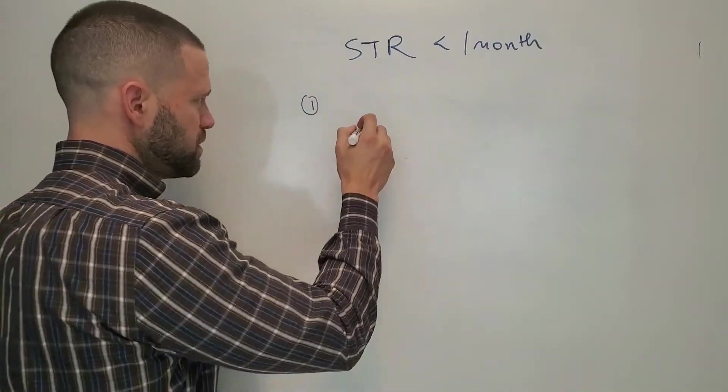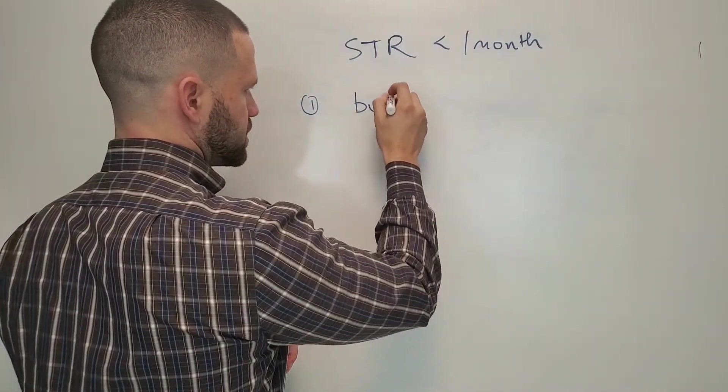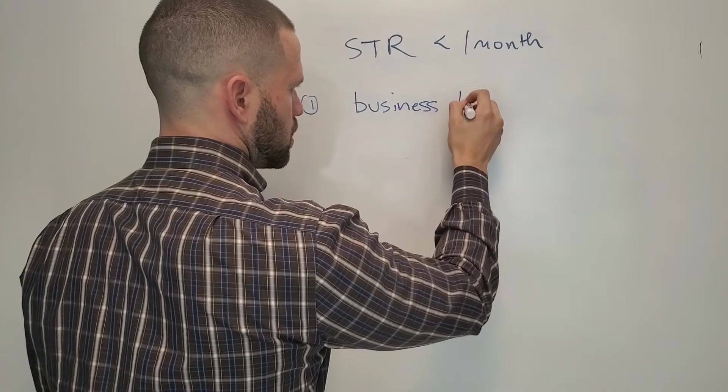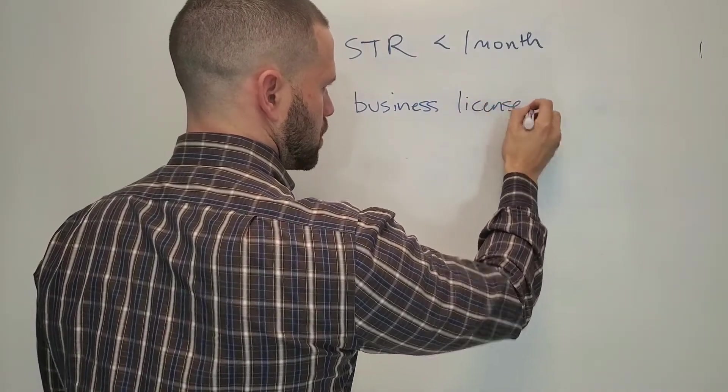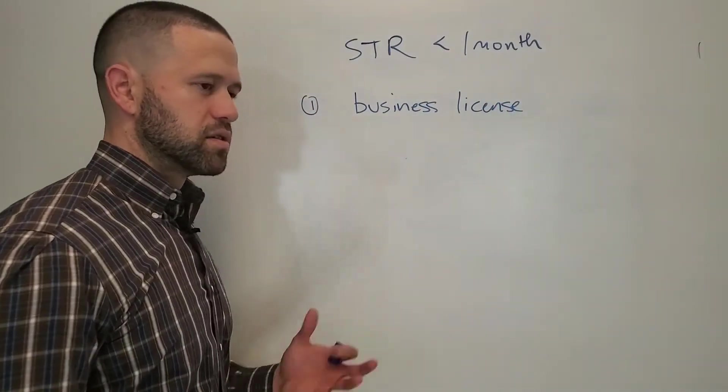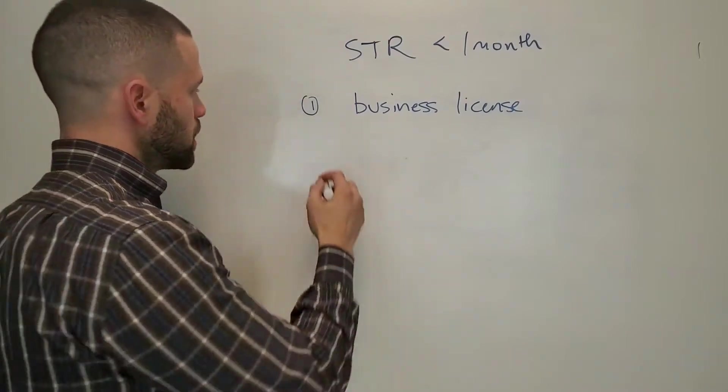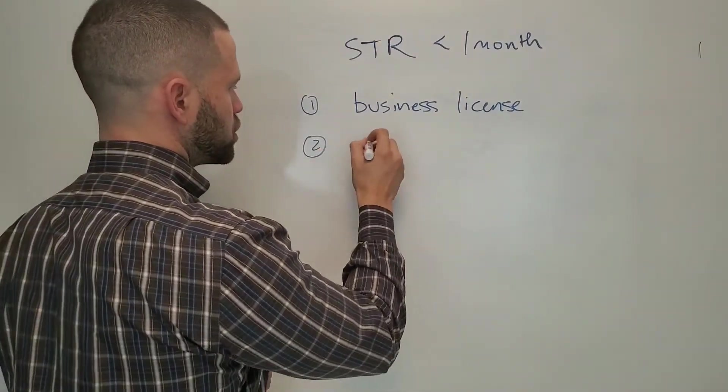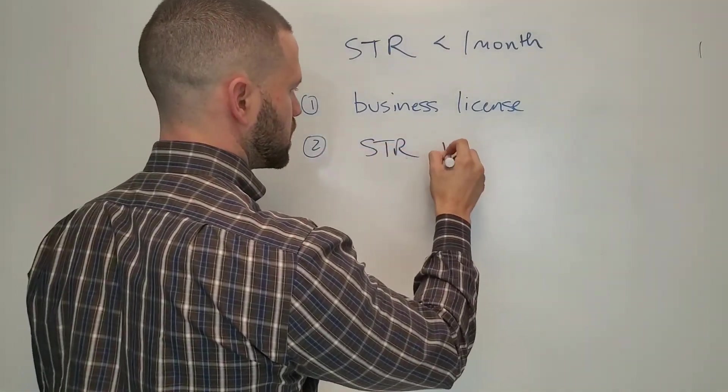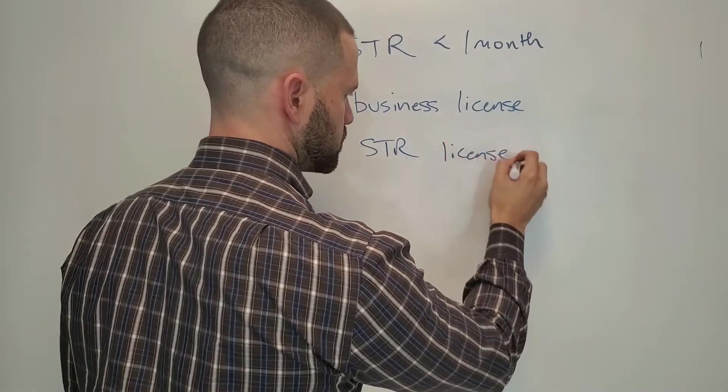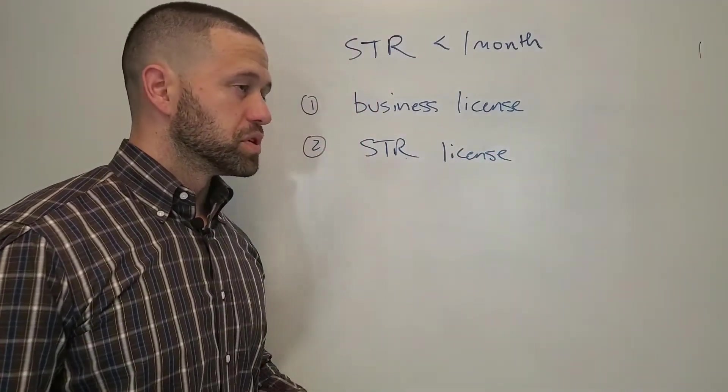The first thing, you need to get a business license because you're running a business, I guess. Two, you need to have a short-term rental license because you're running a short-term rental.